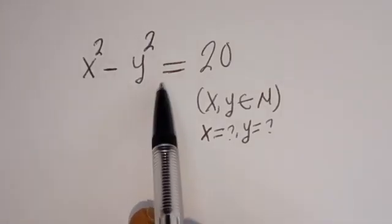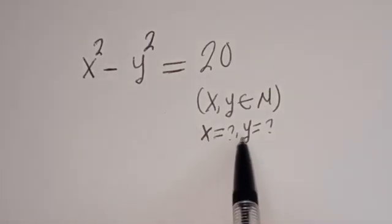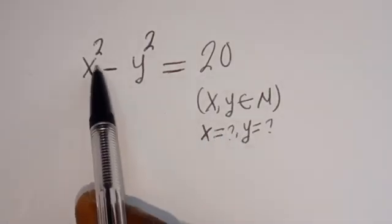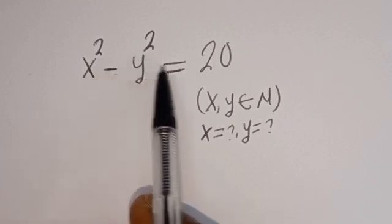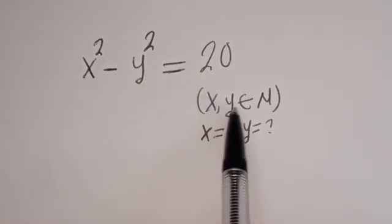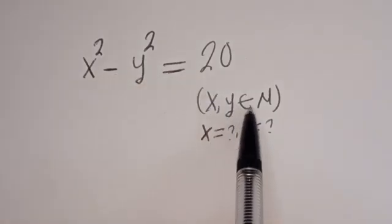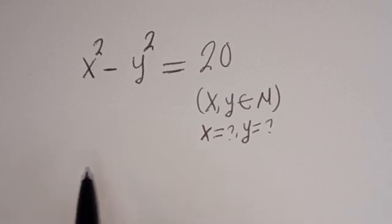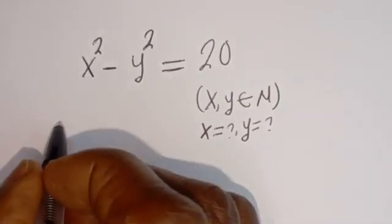Hello, how to solve for x and y in this equation? x squared minus y squared is equal to 20, where x and y are members of the natural number solution.